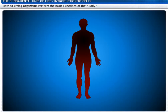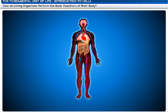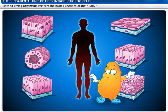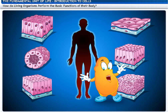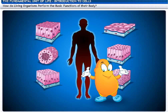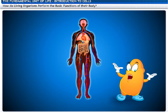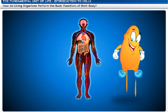Do you know how living organisms perform the basic functions of their body? Living organisms perform these basic functions through division of labor between different organs. Different cells have different jobs allotted to them, and they all work as a team for the body to function.